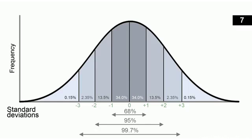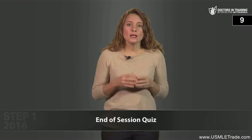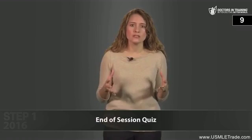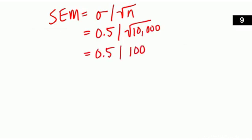Next: the equation for determining the confidence interval is the mean plus or minus Z times the standard error of the mean. Then: in a study of diabetic patients on drug Mekaleca liver, the average hemoglobin A1c after three months is 8, and the standard deviation is 0.5, with a sample size of 10,000. Calculate the 99% confidence interval. First, standard error of the mean equals 0.5 divided by the square root of 10,000, which is 100. So SEM = 0.005.